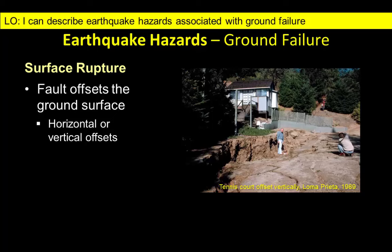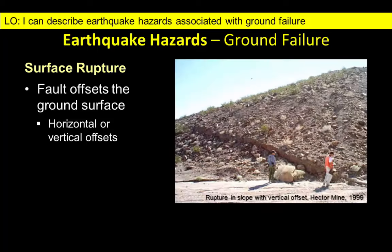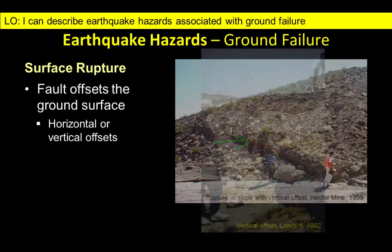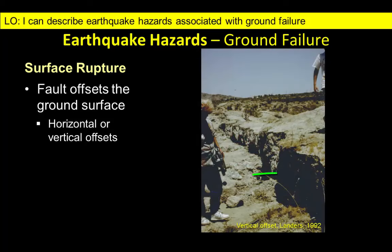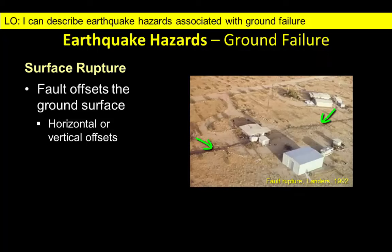Fault movement during earthquakes can result in adjacent pieces of the land surface being displaced by up to several meters. Some blocks may move up or down; others shift from side to side. This is one of the easier hazards to avoid. The general rule is: don't build anything on or near an active fault.